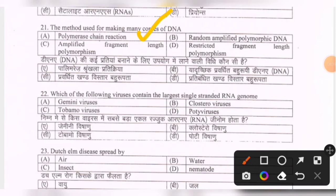Next question: which of the following viruses contains the largest single-stranded RNA genome? Options are geminiviruses, closteroviruses, tobamoviruses, potyviruses. The correct option is B — closteroviruses.